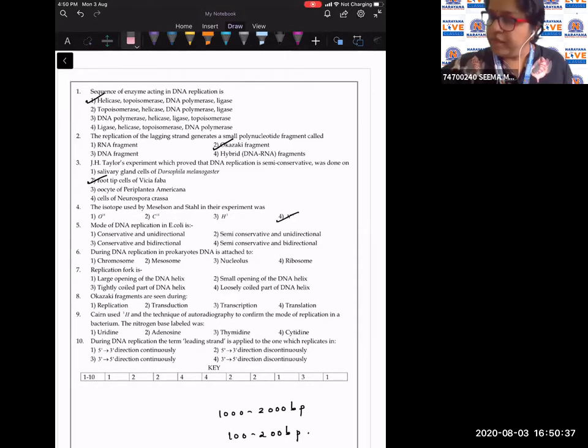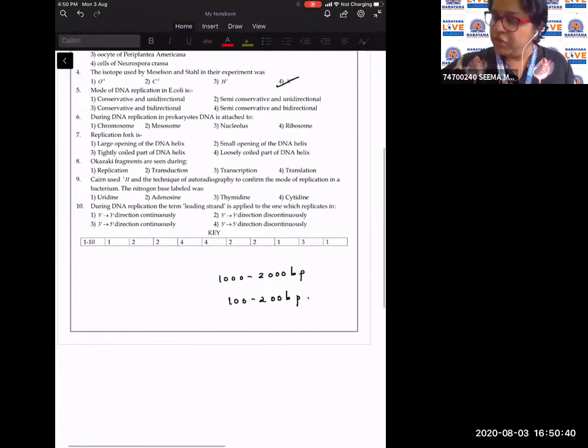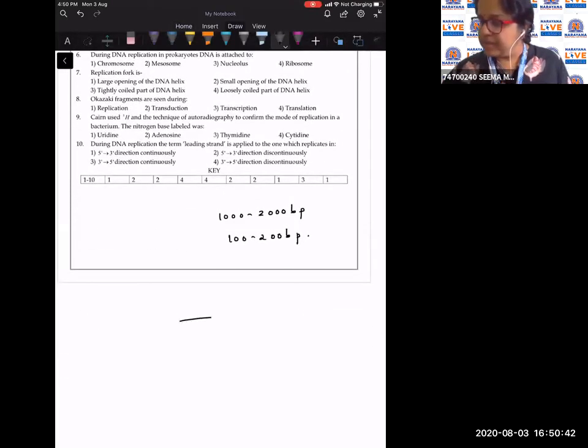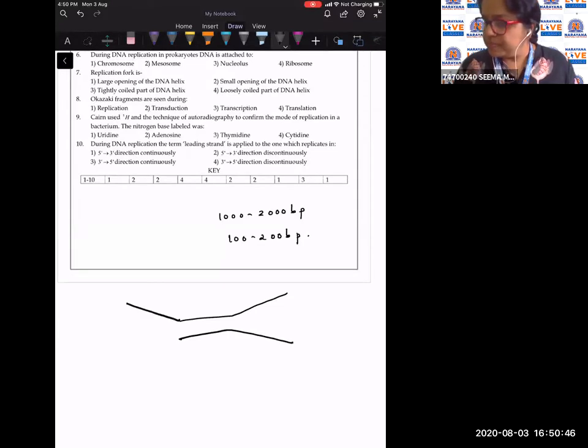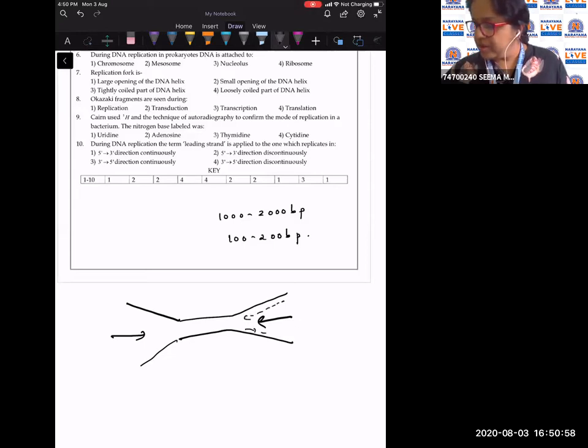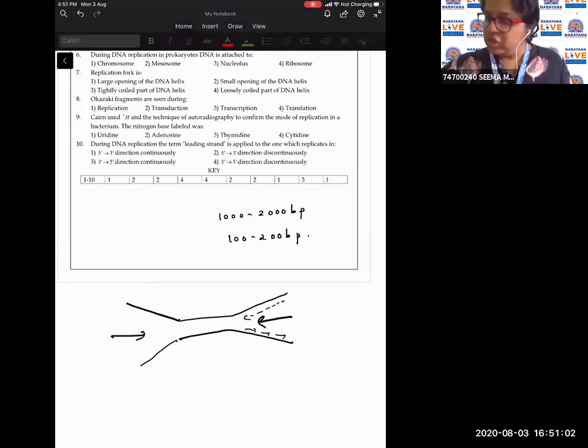So if we just look at the replication fork, like this is the replication fork, then it is in both directions like this, and this is the parent strand and this is the newly synthesized strand. Okay, so it is semi-conservative and bi-directional.